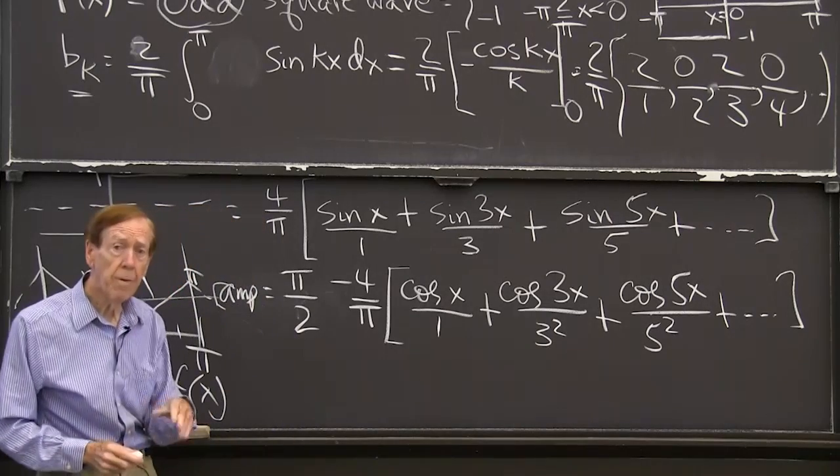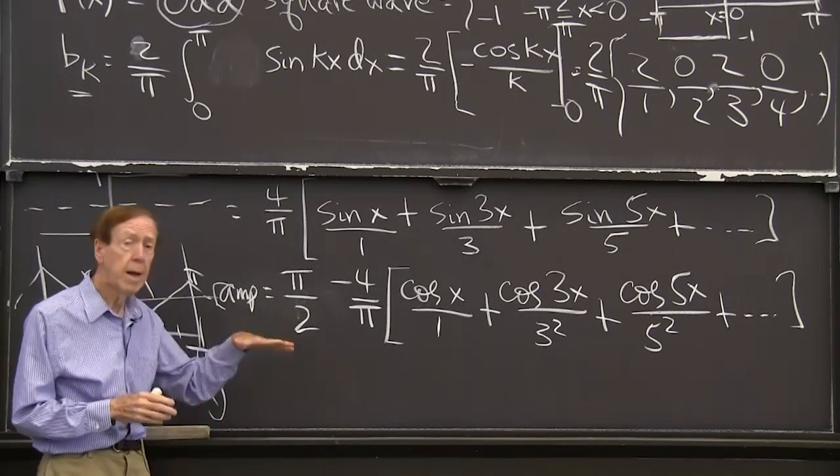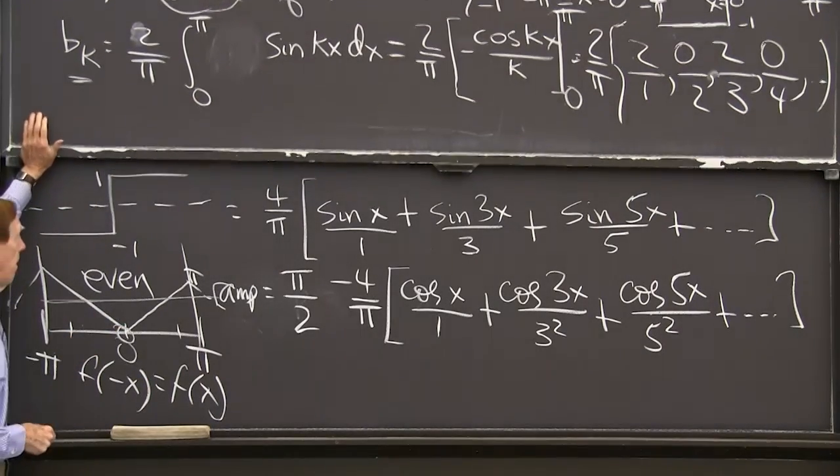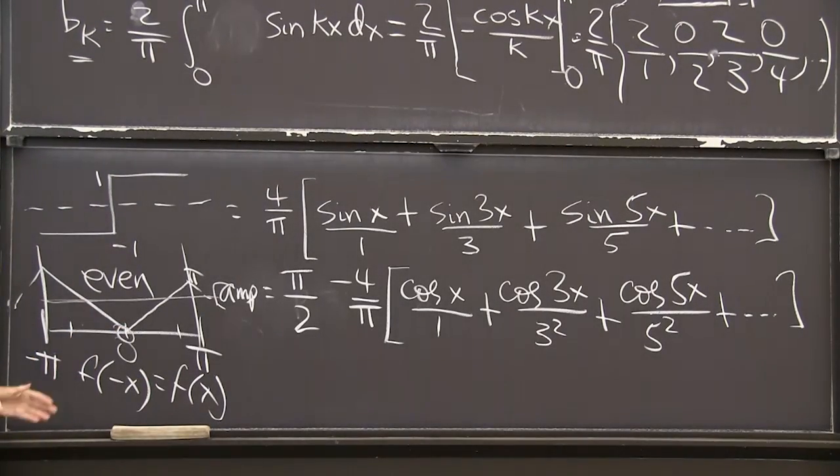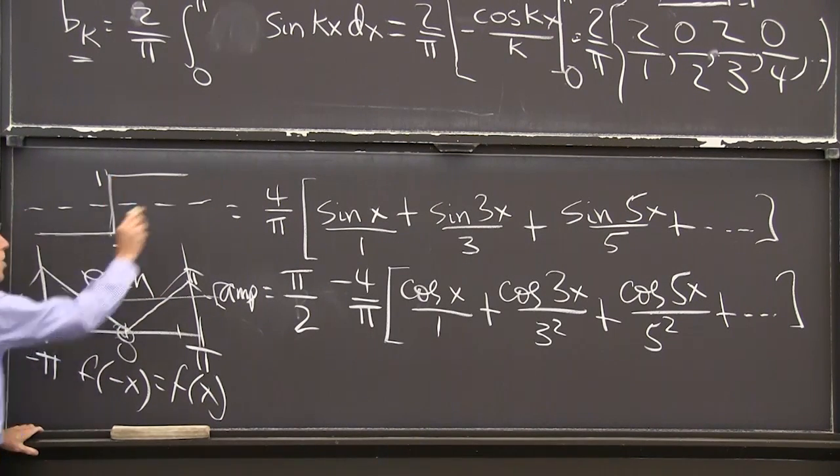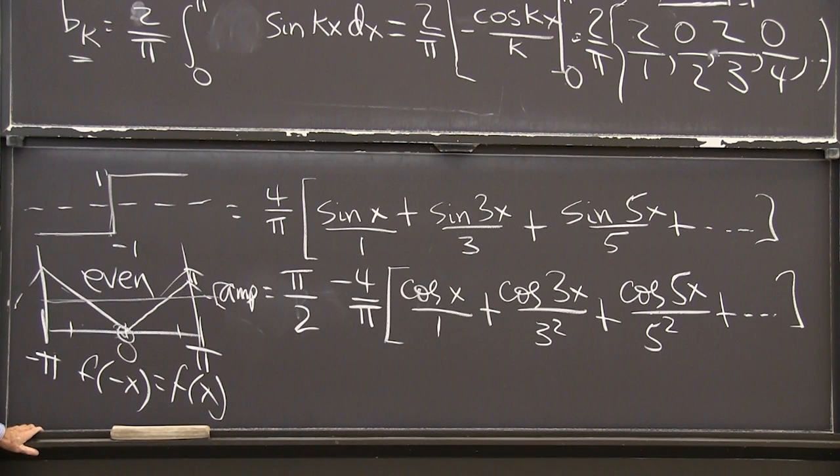And the reason it drops off faster than this one is that it's smoother. This function has corners. This function has jumps. So a jump is one level more rough, more noisy, than a ramp function. The smoother function has faster decay.